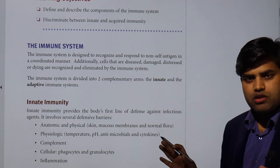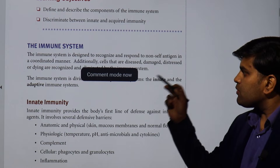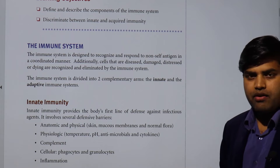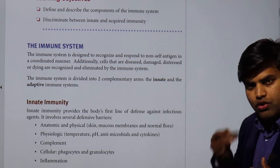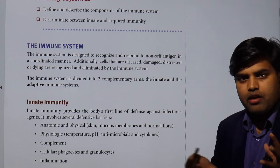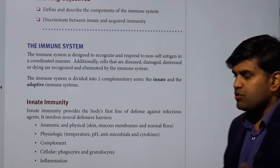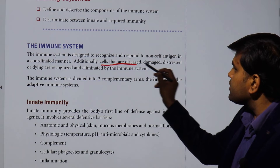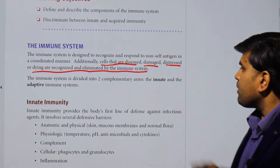Now, what is the immune system? The immune system is designed to recognize and respond to non-self antigens in a coordinated manner. So if anything enters inside your body that is foreign, the body will act in a coordinated fashion to respond to that non-self foreign material and help clear it from the body. Additionally, cells that are diseased, damaged, distressed, or dying are also recognized and eliminated by the immune system.